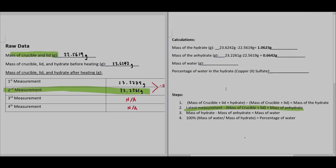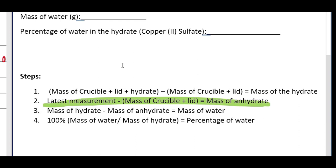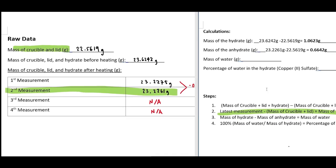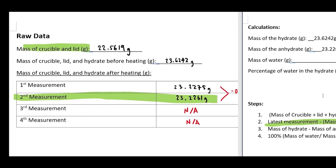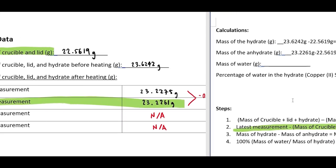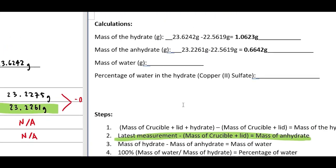Step 2, find the mass of the anhydrate by subtracting the mass of the crucible and lid from the latest mass measurement of the anhydrate. Record the finding.